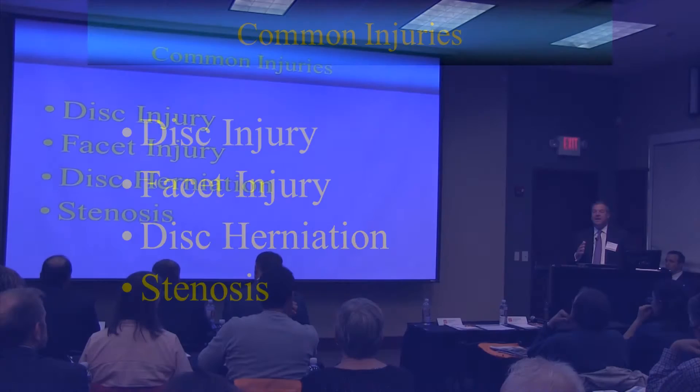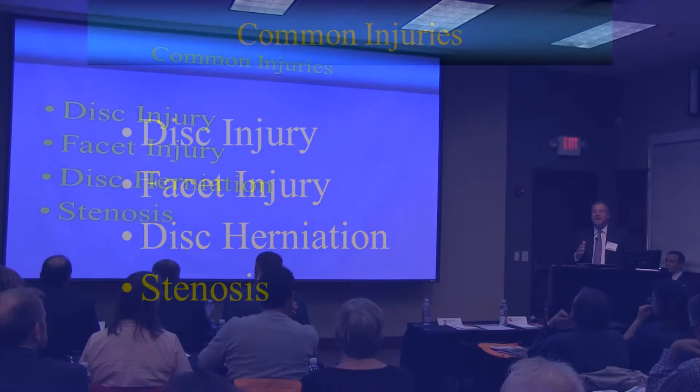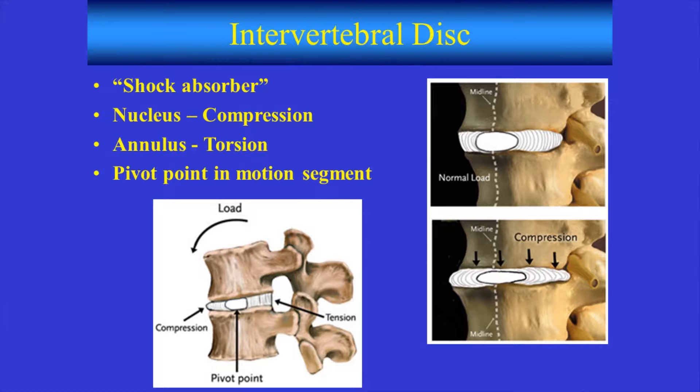If you quickly go through that list in your mind, you're able to eliminate a lot of things. The disc itself serves as the pivot point and gets most of the load — about 80-plus percent goes through the anterior column of the spine and is transmitted to the disc. The disc is thought of as the shock absorber. It's under compression and tension at different times, as well as torsion stresses, so the disc is very susceptible to injury.